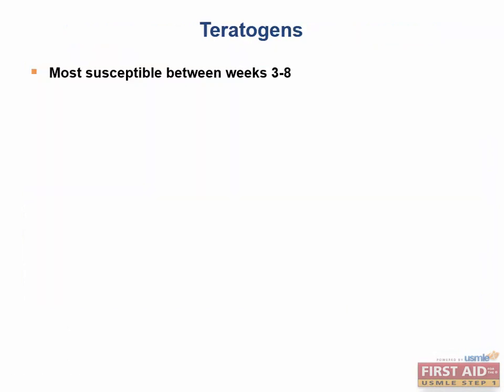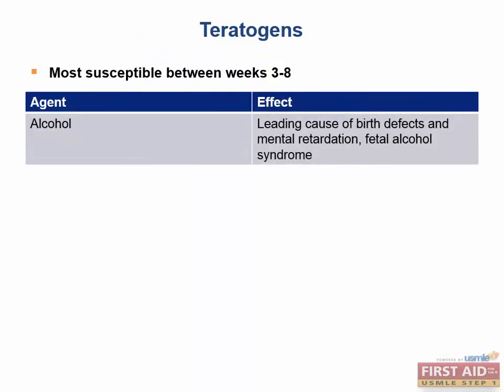Teratogens are most detrimental during weeks three to eight, not weeks zero to three. Alcohol is the most common cause of mental retardation overall. Down syndrome is the most common cause of genetic mental retardation, Fragile X syndrome is the second most common, but alcohol is the most common cause overall. Fetal alcohol syndrome will be discussed on the next slide.